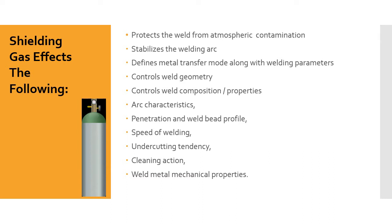Shielding gas affects the following. It protects the weld from atmospheric contamination. This can't be understated — how important this is. You run out of gas while you're using the gas metal arc welding process, you are going to have a mess. You're going to have a weld you're going to have to grind out. It's going to have all kinds of porosity and defects in it.